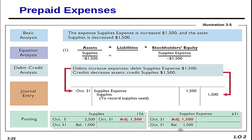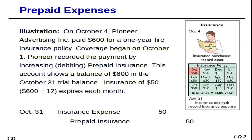Supplies Expense is a one-and-done — we have the adjusting entry giving a balance of $1,500. This will be eliminated when we do closing entries, which we'll work through later in the accounting cycle.